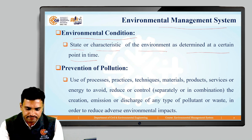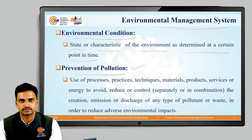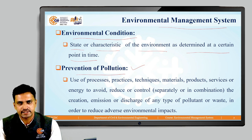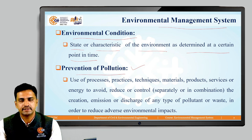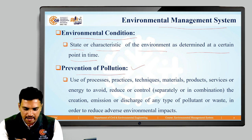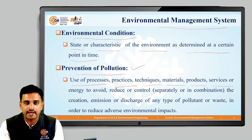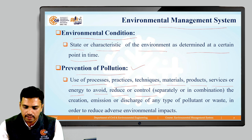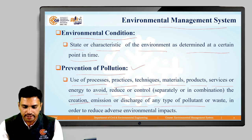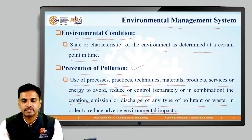The next definition is prevention of pollution. Several approaches are necessary in environmental management system for enhancing the environmental performance and reduction of negative impacts on the environment. This is achieved by use of processes, practices, techniques, materials, products, services, or energy to avoid, reduce, or control the creation, emission, or discharge of any type of pollutant or waste in order to reduce adverse environmental impacts.